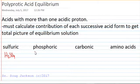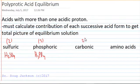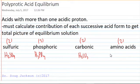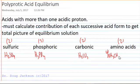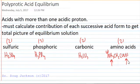Sulfuric acid has two acidic protons. Phosphoric acid has three. Carbonic acid, H₂CO₃, has two as well. Amino acids will have two for the most part — some have more — with a protonated nitrogen and a carboxylic acid on one end, giving an acidic proton on the nitrogen and an acidic proton on the carboxylate group. We'll see biomolecules much later in a general chemistry course.